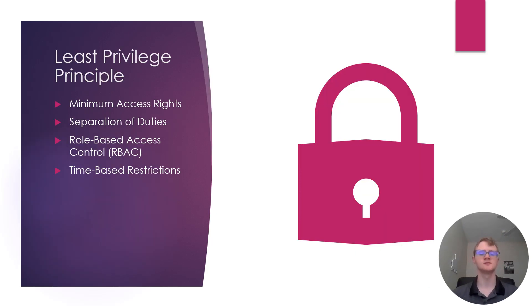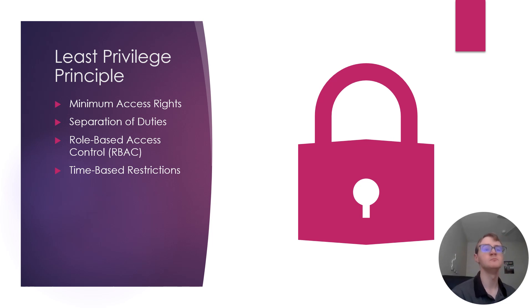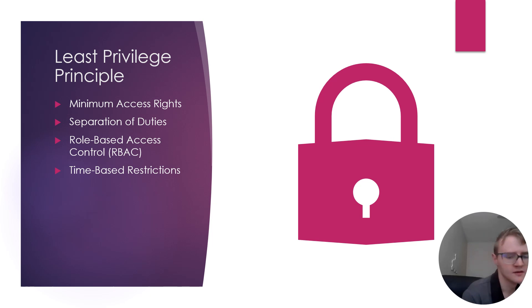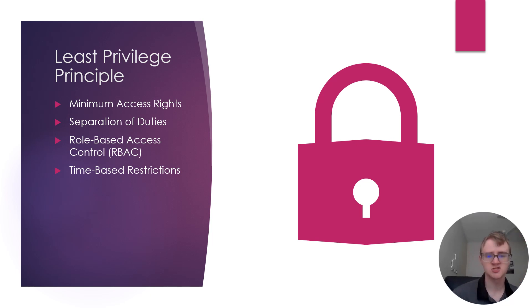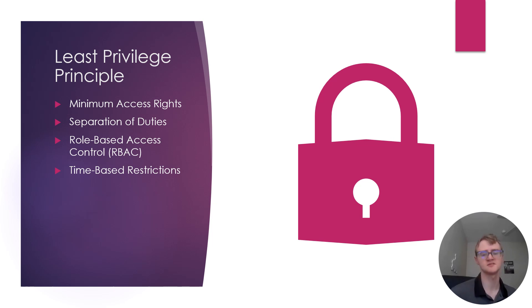The least privilege principle is basically providing the minimum amount of clearance allowed to specifically do your job. This includes minimum access rights, which only assigns permissions required for a user or application to perform their job, and separation of duties, which divides responsibilities and privileges among different individuals or systems to prevent any single point of failure or abuse.